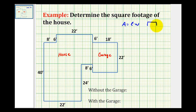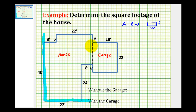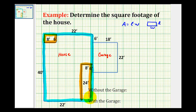If this is our rectangle, we're going to call this the length and this the width. There are a couple of ways of doing this. We could divide this up into small rectangles and determine the area of each rectangle. But it will be easier if we determine the area of this large rectangle, and then subtract out the area of this small rectangle here and this small rectangle here. This would give us the area of the house without the garage.